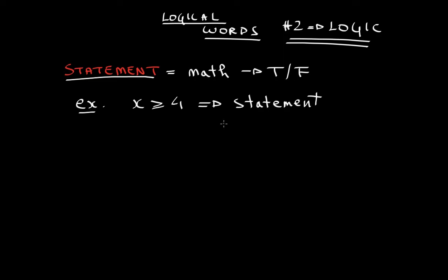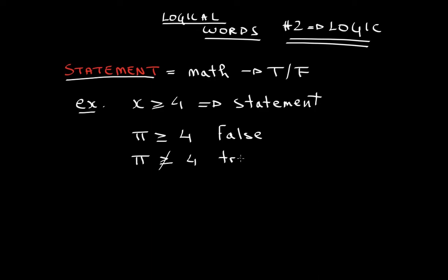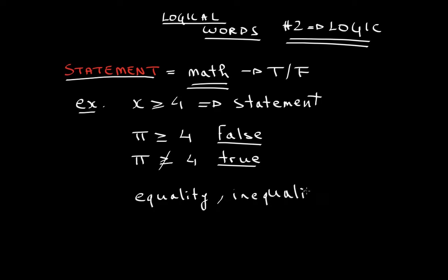This statement can be true and it can be false. If you put pi is greater than or equal to 4, then this is not true — so this is false. However, for a number like 5, this would be true. All I need you to understand is that a statement is some sort of math — it could be an equality or inequality, anything with a variable which makes a sentence. Think of the statement as a mathematical sentence, like writing a thesis that you want to prove. That's what we will be doing in this course: we will have some sort of theorem and we will be proving it. Normally, theorems are full of statements.